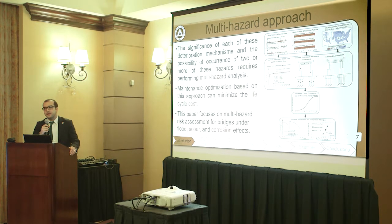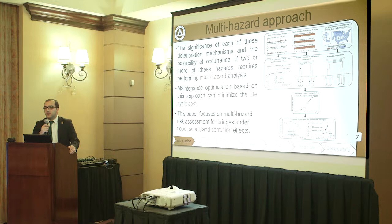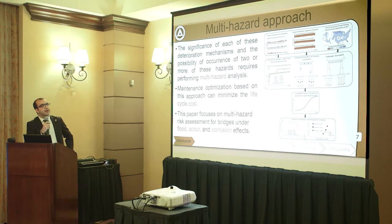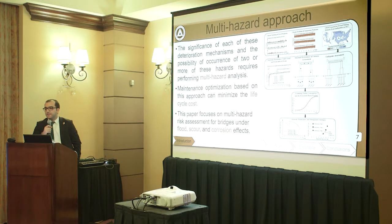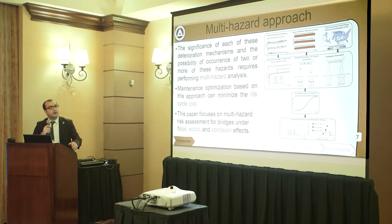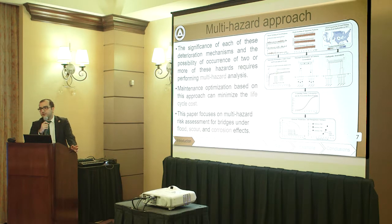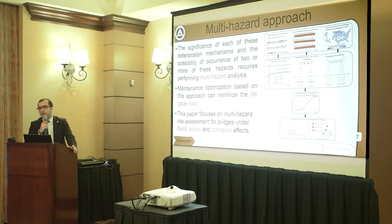Due to the significance of each of these events — flood, scour, corrosion, and earthquake — and the possibility of two or more hazards occurring simultaneously, we need to perform a multi-hazard risk analysis. As a result, we can develop a time-dependent risk profile, and based on that profile we can perform maintenance optimization and develop optimum maintenance and inspection plans. I've shown here a general flowchart of this process, which starts with adopting global climate models and USGS hazard maps, then performing structural analysis, evaluating consequences of failure, and ending with the risk profile.